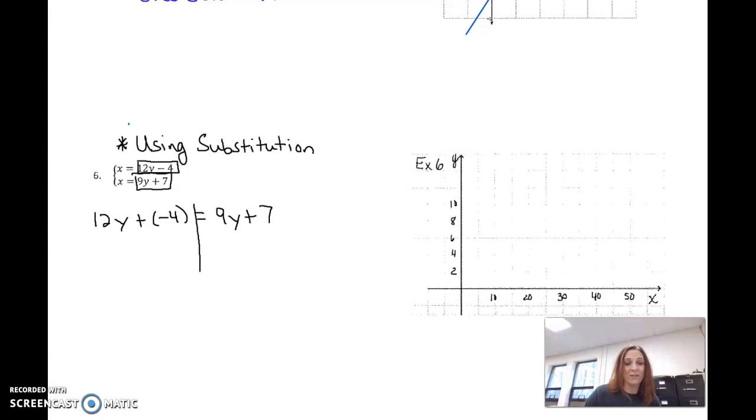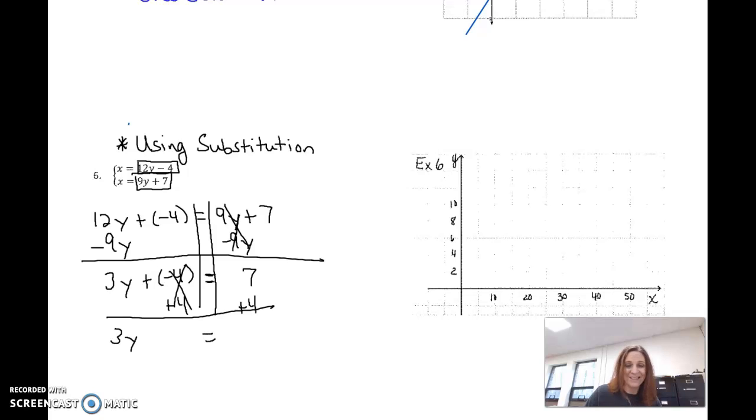All right, so now we have an equation with y on both sides. So I'm going to get rid of 9y. I'm going to subtract 9y from each side. I have 3y plus a negative 4 equals 7. Now we have a two-step equation. I'm solving for y. I've got to get rid of the negative 4. So I'm going to add 4 to both sides. I have 3y. That cancels out, equals 7 plus 4, which is 11. And then I divide both sides by 3. We get y equals 11 thirds.